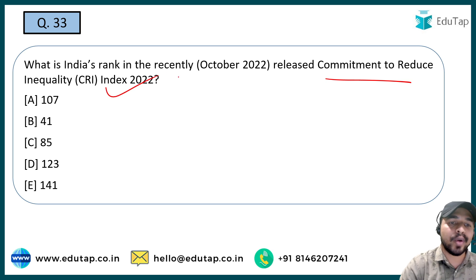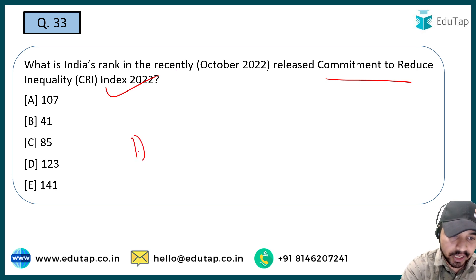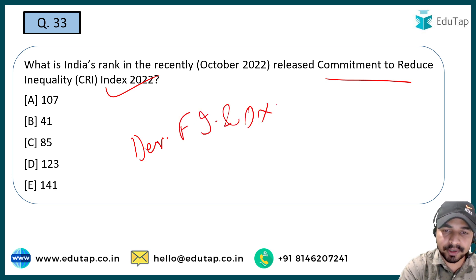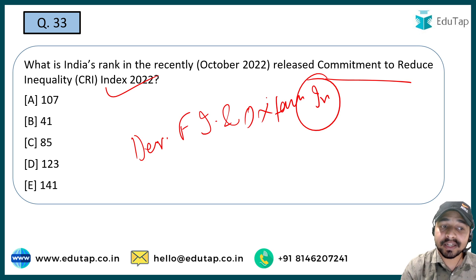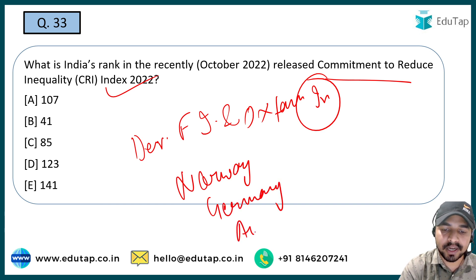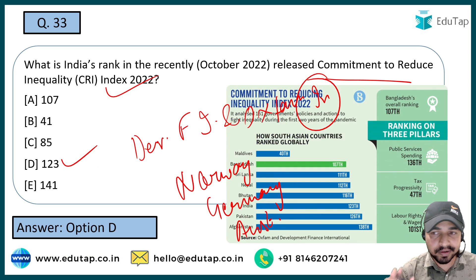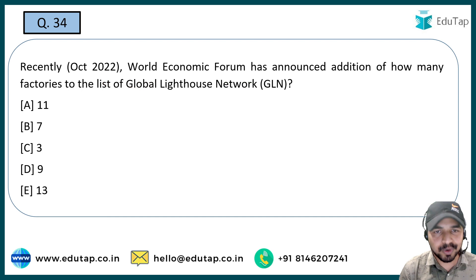The next question: Commitment to Reduce Inequality Index 2022 — what is India's rank in this index? This index was launched by Development Finance International and Oxfam International together. The country that topped is Norway, followed by Germany in second position and Australia in third. India is ranked 123rd in this particular index. Remember: Commitment to Reduce Inequality Index, India's rank is 123, topped by Norway.